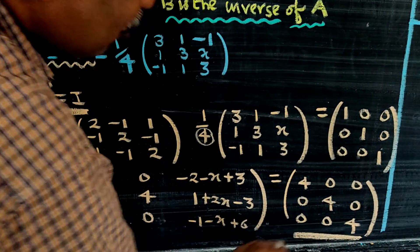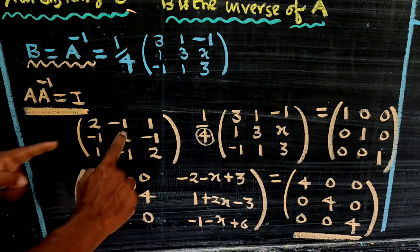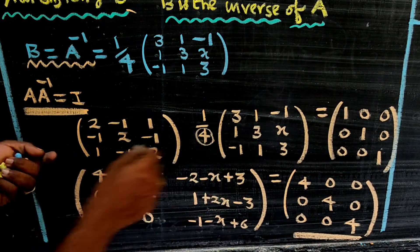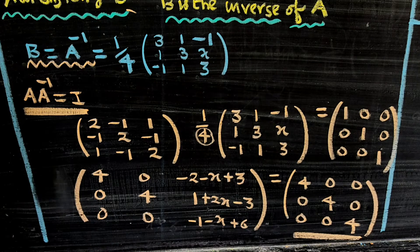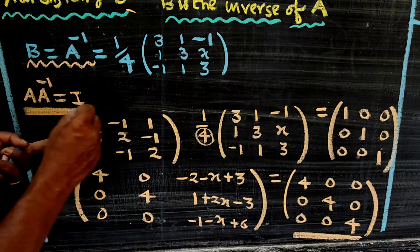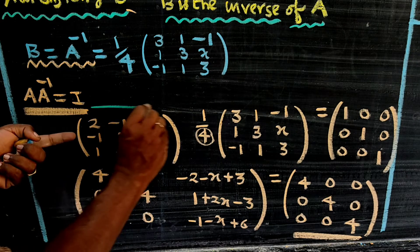Now we have A and A inverse. We need to multiply these two matrices. We perform matrix multiplication using the row into column method.